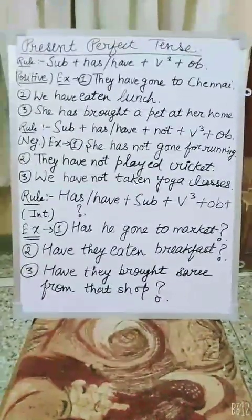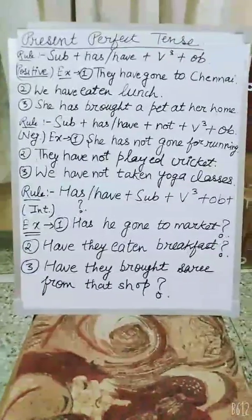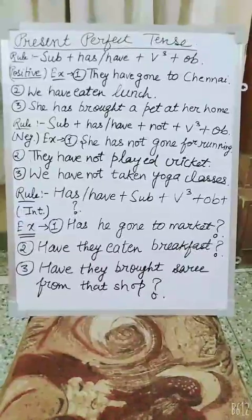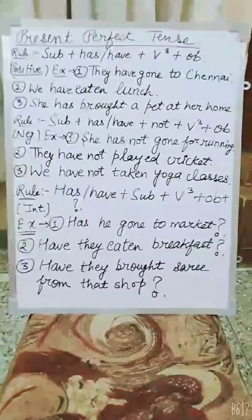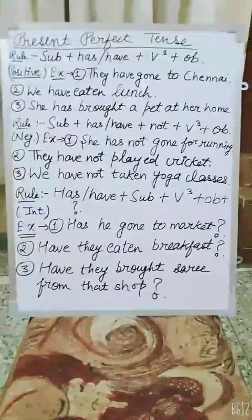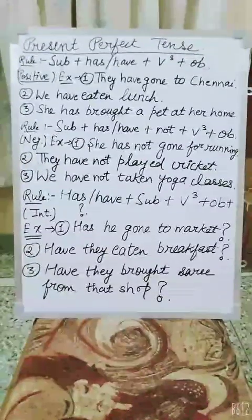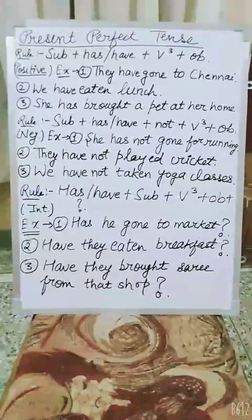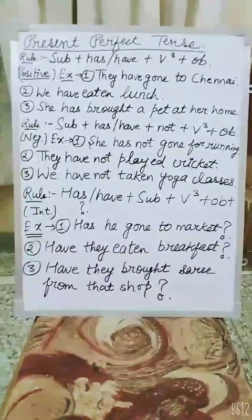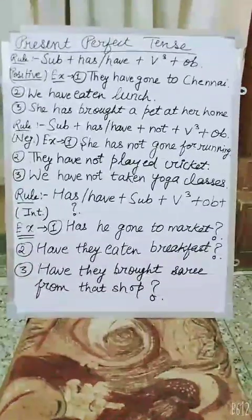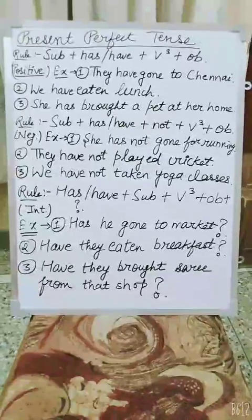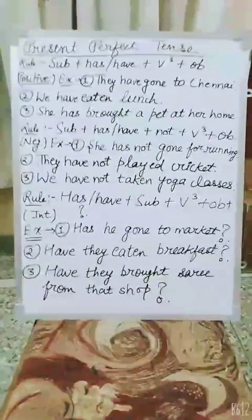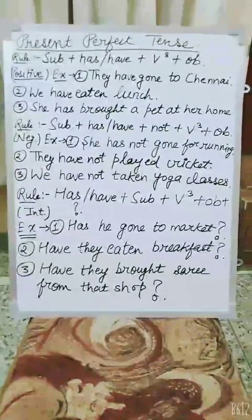Now let's look at the negative rule: subject plus has/have plus not plus verb's third form plus object. For example: 'She has not gone for running.' Here, 'she' is the subject, 'has' is the helping verb, 'not' indicates negative, 'gone' is the verb's third form, and 'for running' acts as the object.